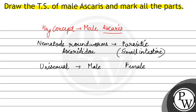Male Ascaris में जो reproductive organs present होते हैं, वो होते हैं single. For example, single testis, single seminal vesicle, etc. So, male Ascaris होते हैं monoarchic in nature.